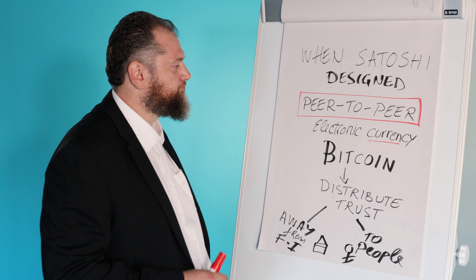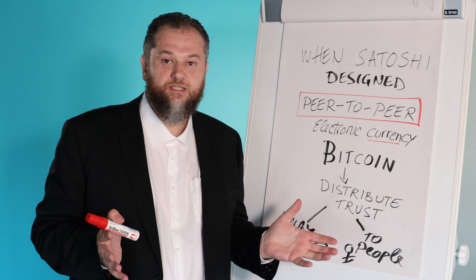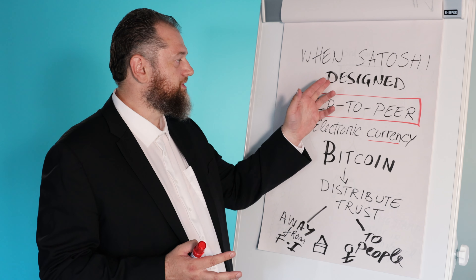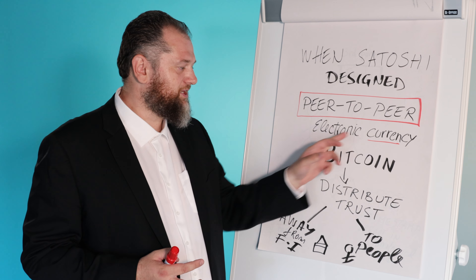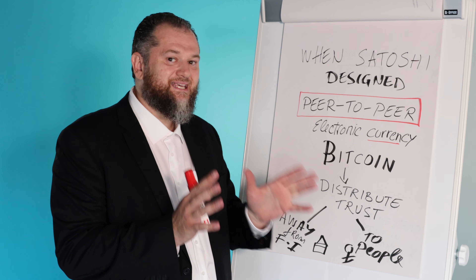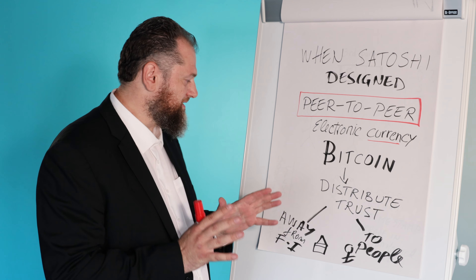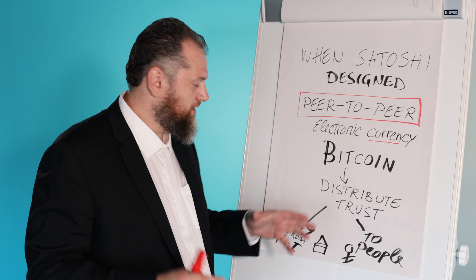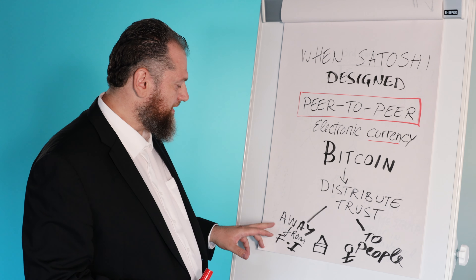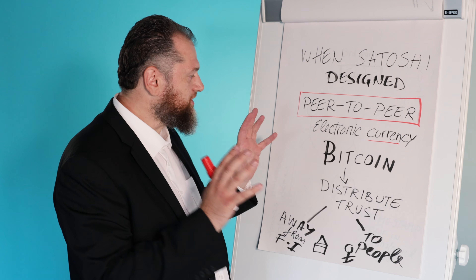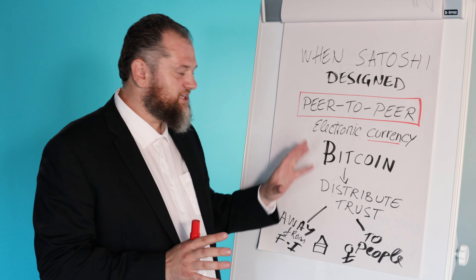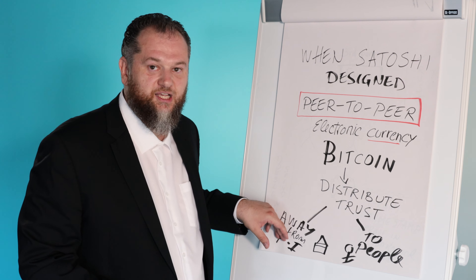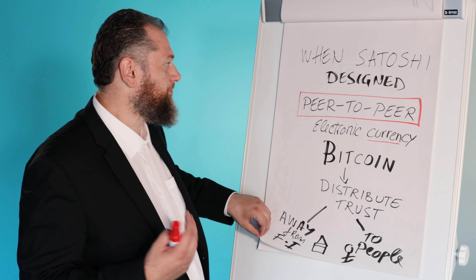That brings us to digital currencies, which are very popular these days. When Satoshi Nakamoto designed peer-to-peer electronic currency, Bitcoin, he saw a particular problem: that trust in order to facilitate payment is basically in the hands of financial institutions. So what he wanted to do is distribute that trust to the people and away from financial organizations like banks.